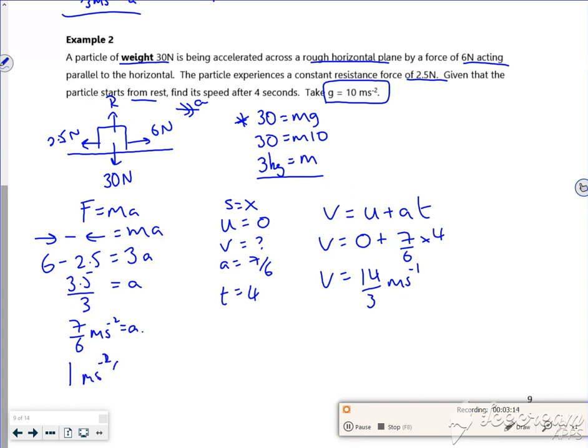7 divide 6 gives me 1.16, so to one significant figure that should be 1 meter per second squared acceleration. And 14 over 3 is not a half, believe it or not. 14 over 3 is 4.6 or 4.7, so 5 meters per second to one significant figure.